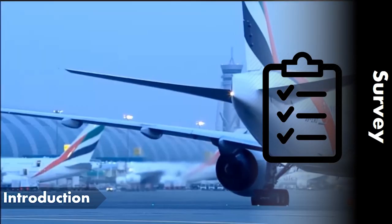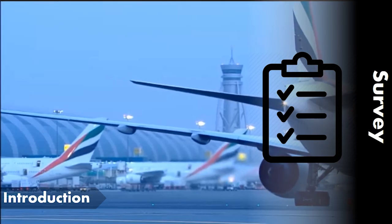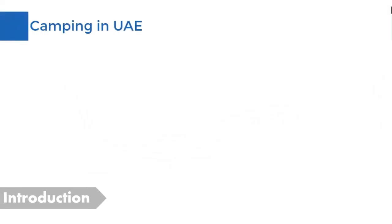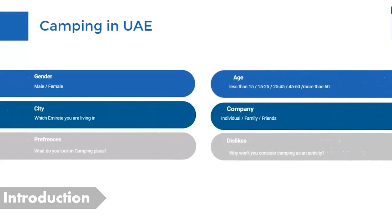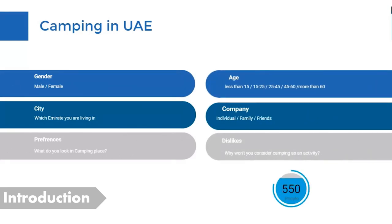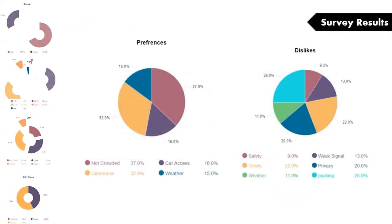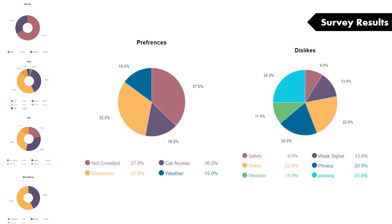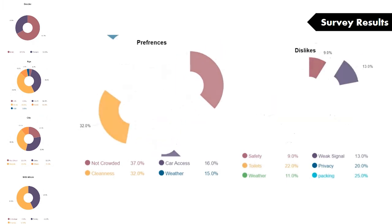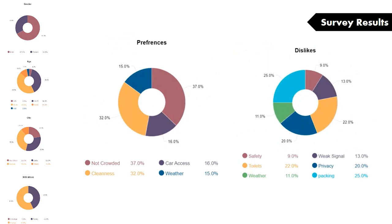To decide what tourists and locals in UAE like to do as an entertainment activity, we created a survey and distributed it around metros and airports. To strengthen our idea, we went back and did another survey asking people why they would prefer or not prefer camping as an activity. Around 500 people participated. Results showed most prefer camping since it's suitable for families and friends, offers nice weather, and is not crowded. People who dislike it mentioned packing, gas problems, safety, and privacy. Using these comments we will improve our design to satisfy people's needs.